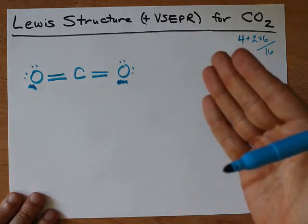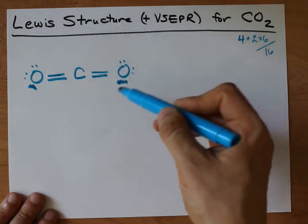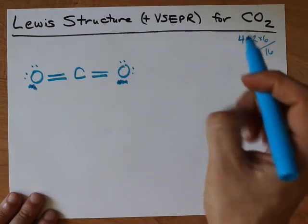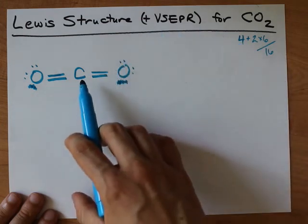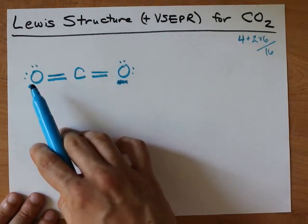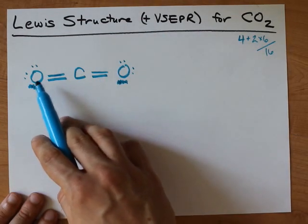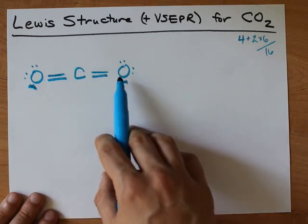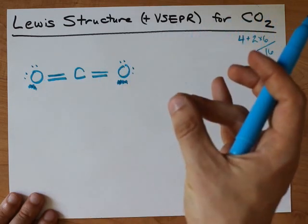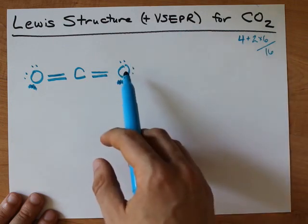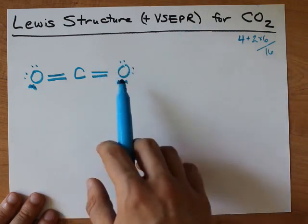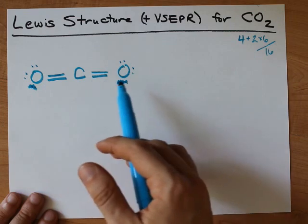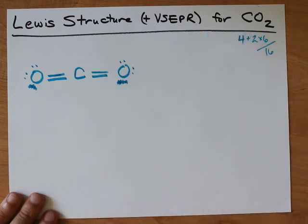If you're wondering why we don't move both electron pairs from the same oxygen, it has to do with formal charge. The formal charge on carbon would have been the same, but the formal charge on this oxygen would have been minus one, and this oxygen would have been plus one. We don't like having positive formal charges on electronegative atoms, and least of all when we can avoid it. And we can avoid it here by making two double bonds, which is a little more balanced.